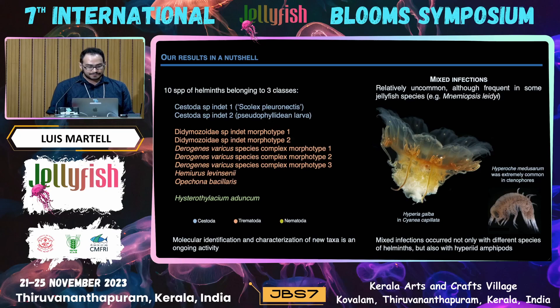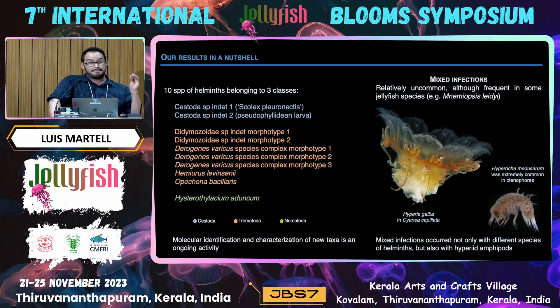In total we have 10 morphospecies of helminths currently being analyzed: two tapeworms, a number of flukes, and one nematode. We also have a lot of mixed infections — not only between worms of different species but also with amphipods, because we analyzed all the amphipods that were embedded in the mesoglea. The threshold was that the amphipod needed to be embedded in the mesoglea.